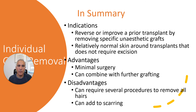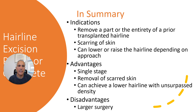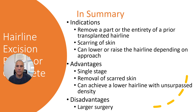In summary, the technique of individual graft removal is mainly indicated to remove, improve, or reverse a prior transplant by removing specific unesthetic grafts. The advantage is that it's minimal surgery; the disadvantage is it requires several procedures to remove all hairs and can add scarring. Hairline excision, on the other hand, removes part or all of a prior transplanted hairline, gets rid of scarring, is a single stage, and can achieve a lower hairline with unsurpassed density. Its main disadvantage is that it's a larger surgery.